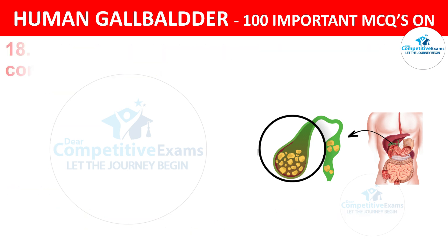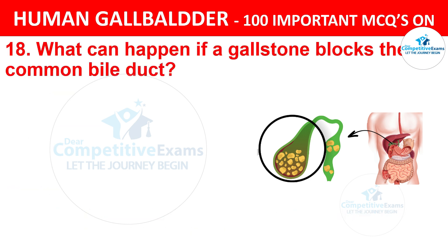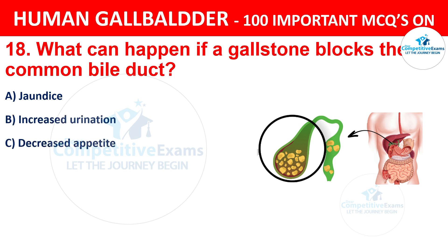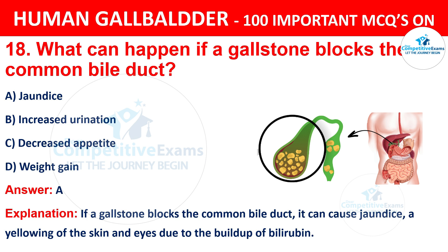Question 18: What can happen if a gallstone blocks the common bile duct? The correct answer is A, jaundice. If a gallstone blocks the common bile duct, it can cause jaundice — yellowing of the skin and eyes — due to the buildup of bilirubin.